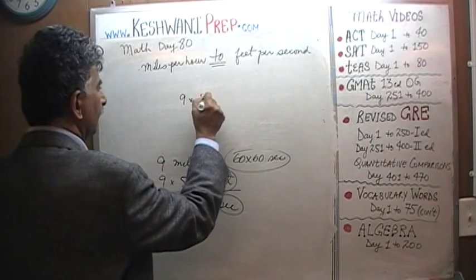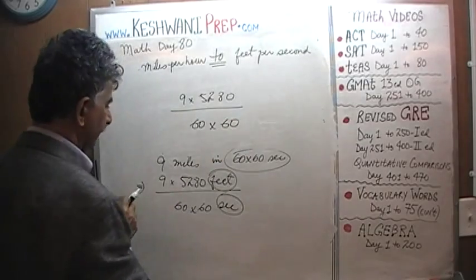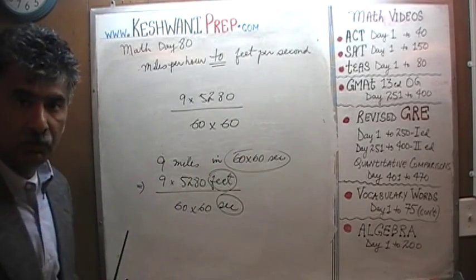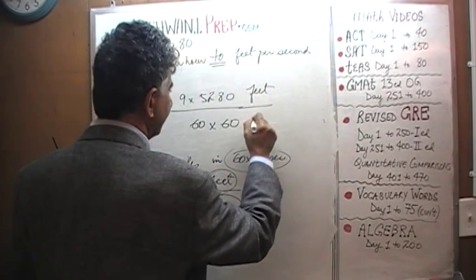9 times 5,280 over 60 times 60. Of course, the point here is to be able to do this thing without a calculator. These are feet and these are seconds.